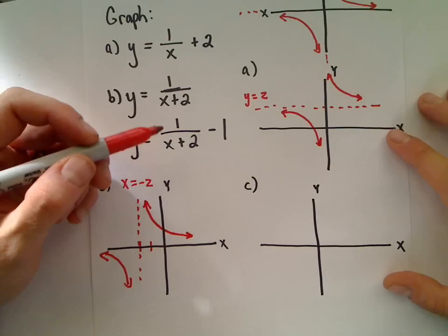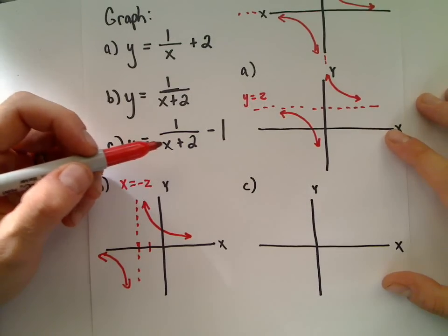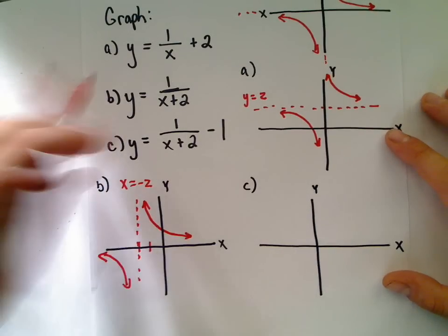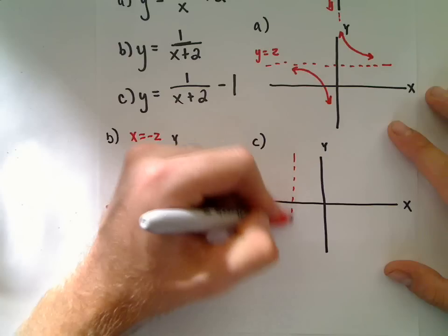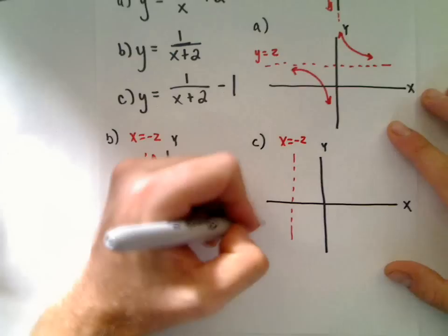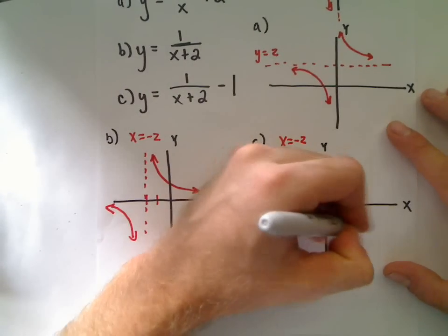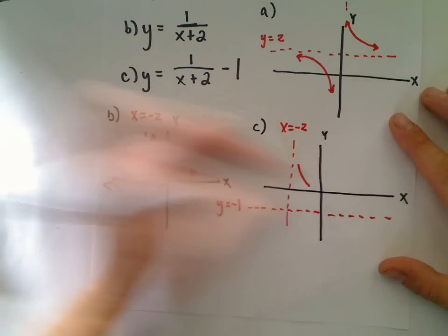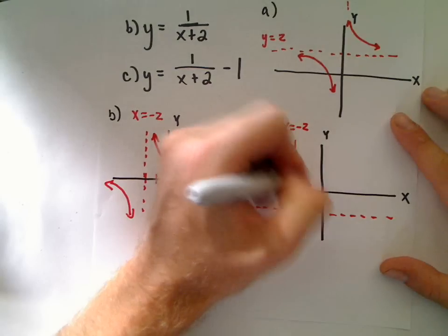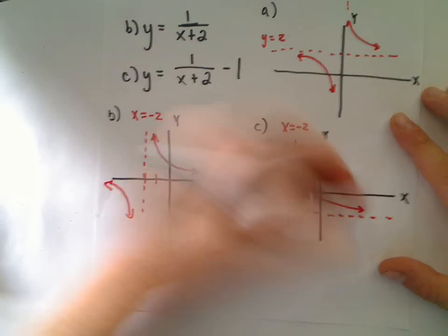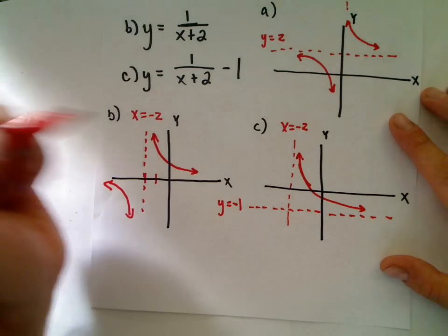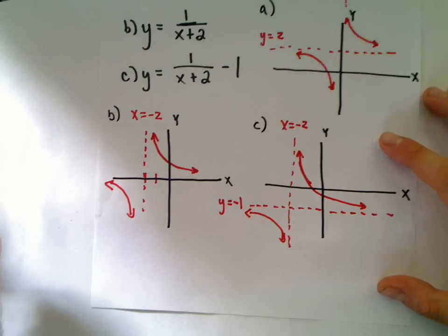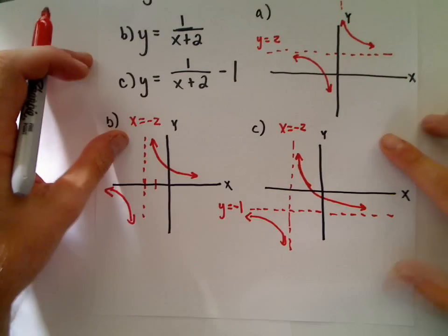For 1/(x+2) - 1, this takes our graph from part b and shifts it down one unit. The vertical asymptote is still at x = -2, but the horizontal asymptote moves from the x-axis down to y = -1. The graph should cross below with a negative y-intercept, but otherwise has the same basic shape.